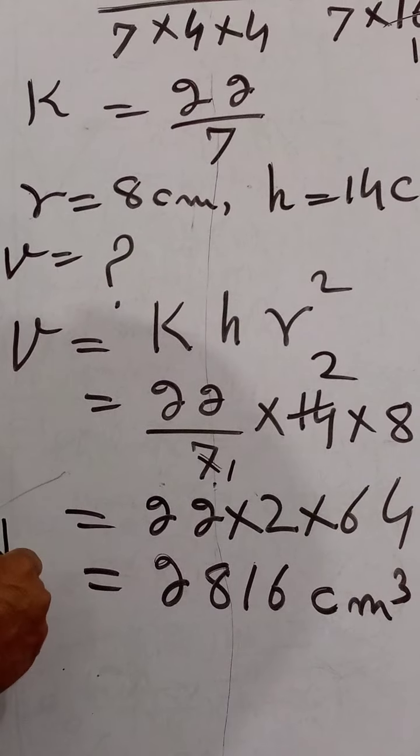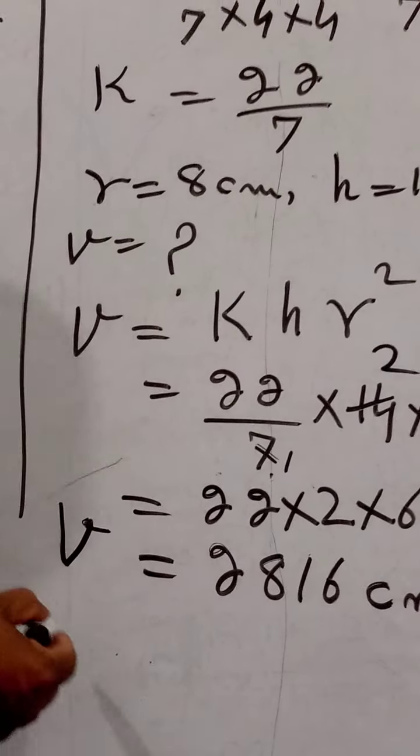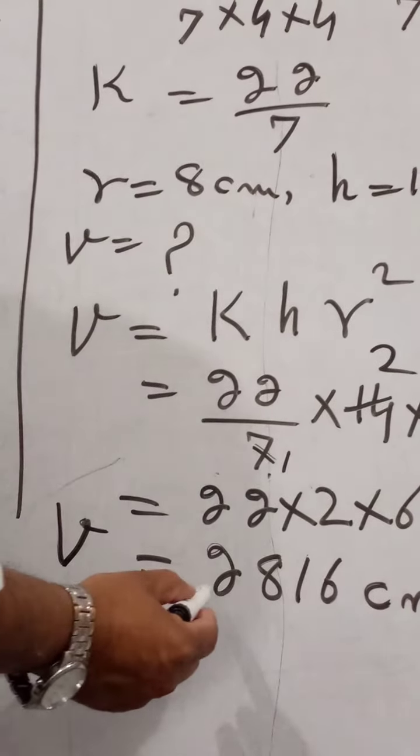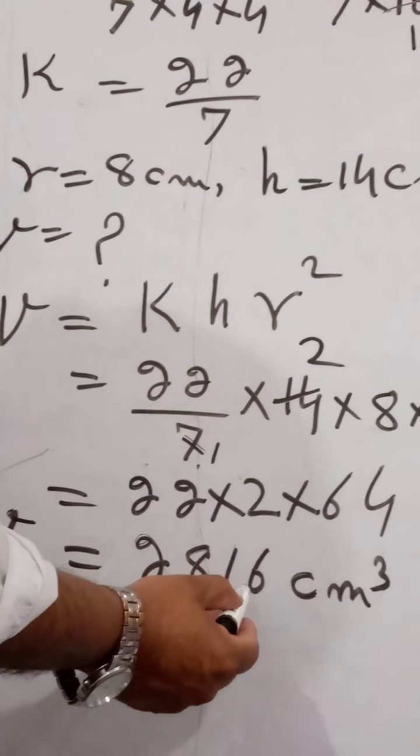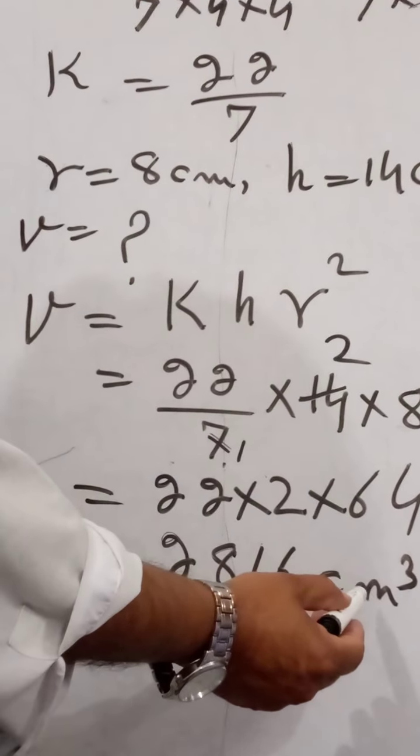which is the volume of the required cylinder. The volume of the required cylinder is 2816 cm cube.